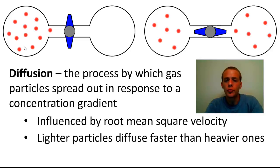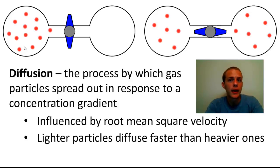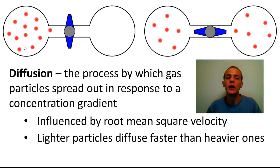It's also true that lighter particles are going to diffuse faster than heavier ones. So in those few seconds after your roommate just ripped a big one, the particles that reach your nose first are going to be the lighter ones, and then the heavier ones eventually catch up shortly thereafter. That's diffusion — spreading out in response to a concentration gradient, moving from high to low concentration.